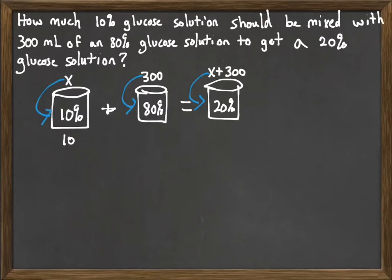So, X times 10% would be just 10X. 80% times 300. And 20% times X plus 300.